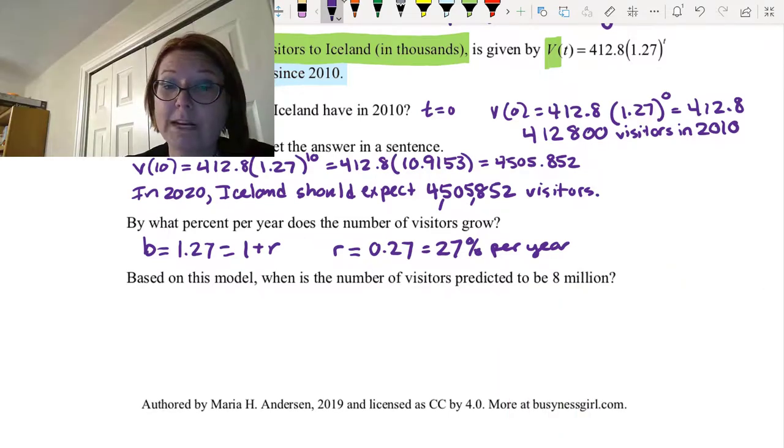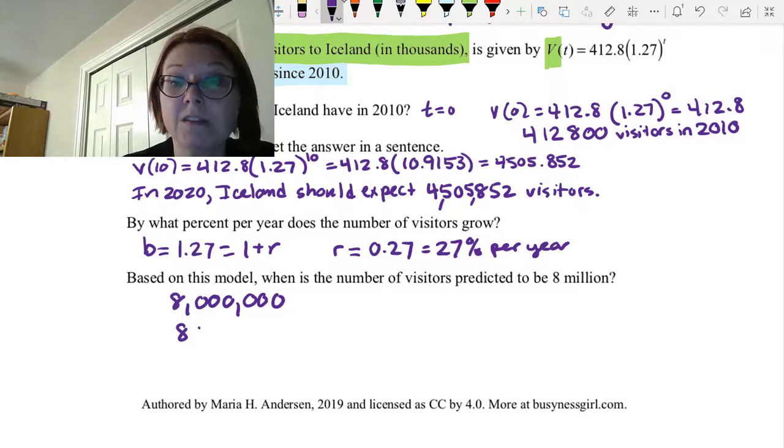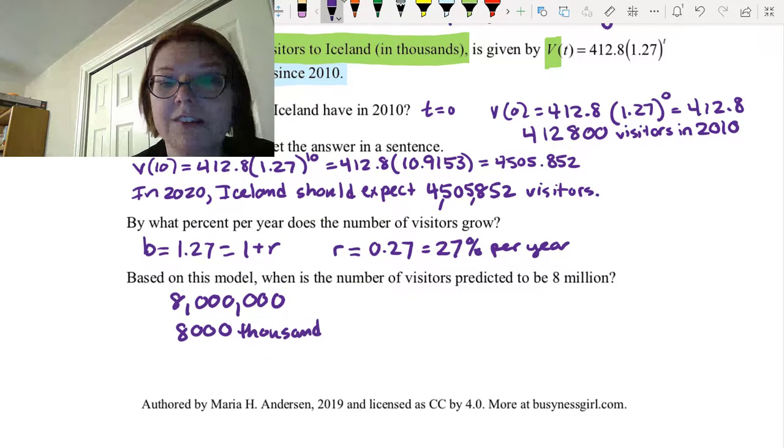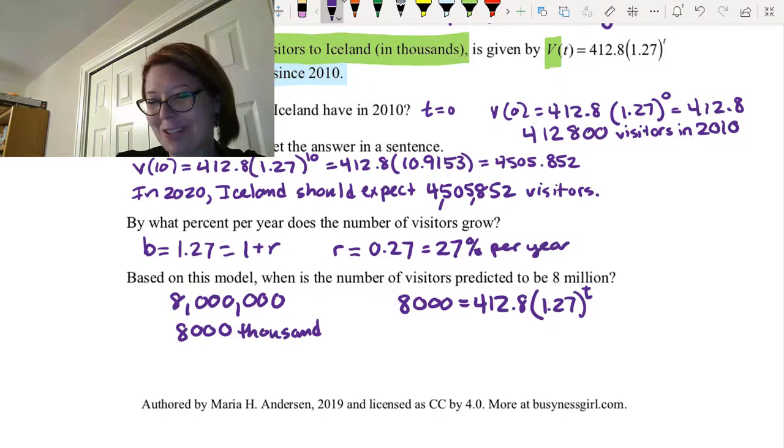Now, based on this model, when is the number of visitors predicted to be 8 million? Well, 8 million, the first thing we need to do is convert it to a number in thousands. So 8 million is actually 8,000 thousands. So we want to solve 8,000 = 412.8 times 1.27 to the t. And again, we haven't learned how to solve those yet. But we can graph the left side, which would be y = 8,000.